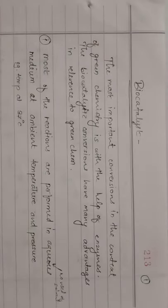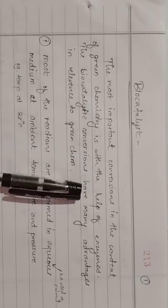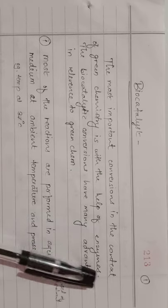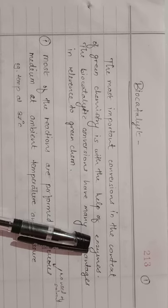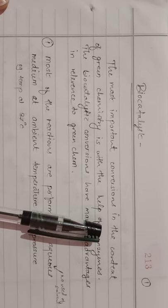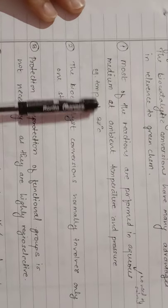The most important conversion in the context of green chemistry is with the help of enzymes, and biocatalytic conversions have many advantages relevant to green chemistry. Enzymes produced by any microorganism or biological system are called bioenzymes and can be used as biocatalysts. Enzymes that increase the rate of reaction and are produced by microorganisms or biological systems are referred to as biocatalysts.